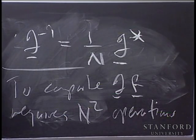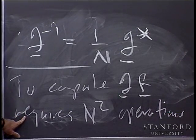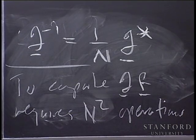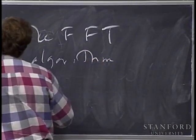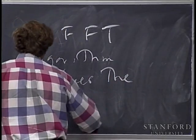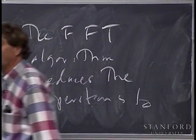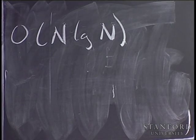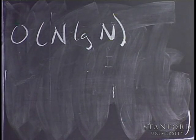You would think you're stuck at N squared and can't do any better. But as you all know, the fast Fourier transform algorithm is a way of reducing the number of operations — it's quite striking. The FFT algorithm reduces the operations to on the order of N log N, from N squared to N log N.